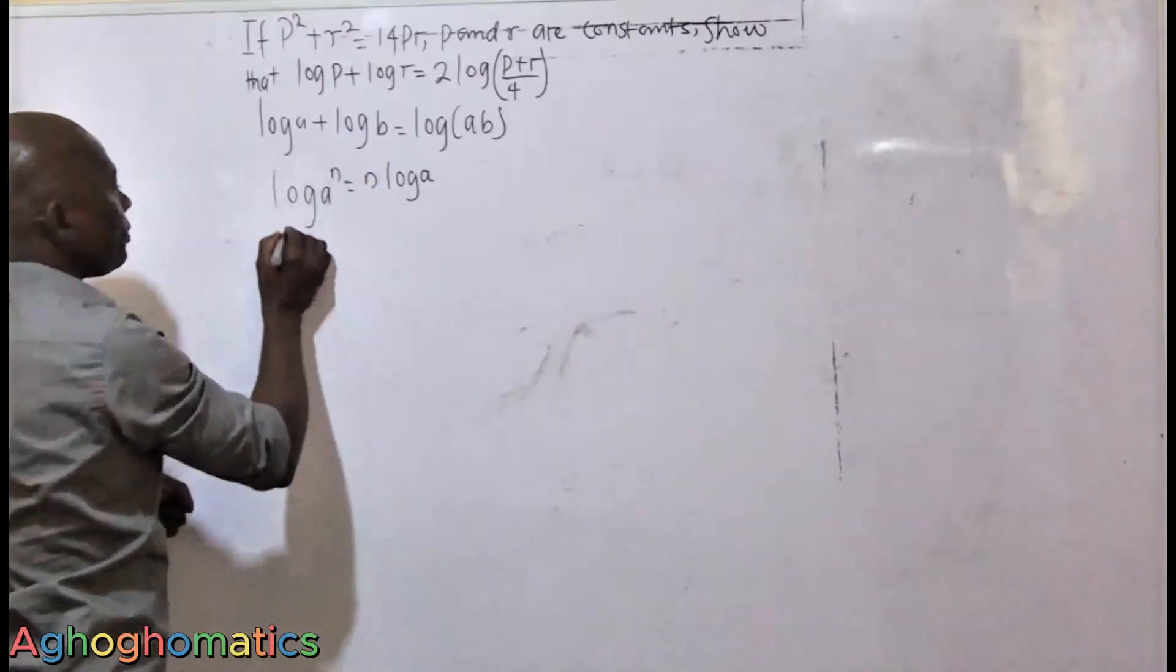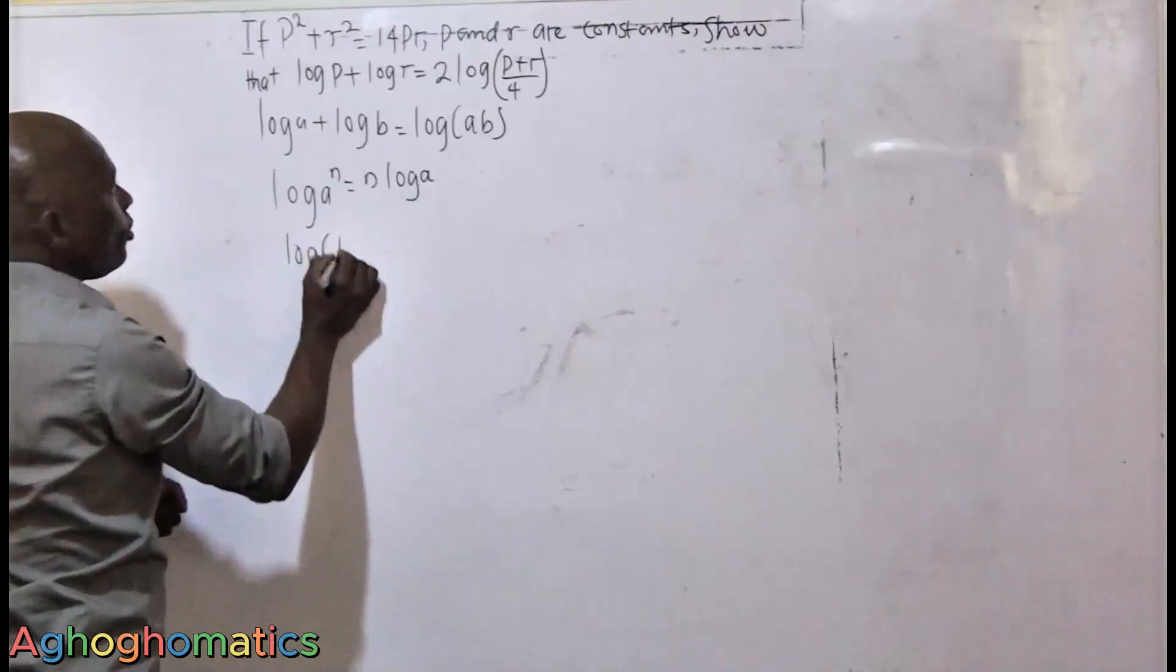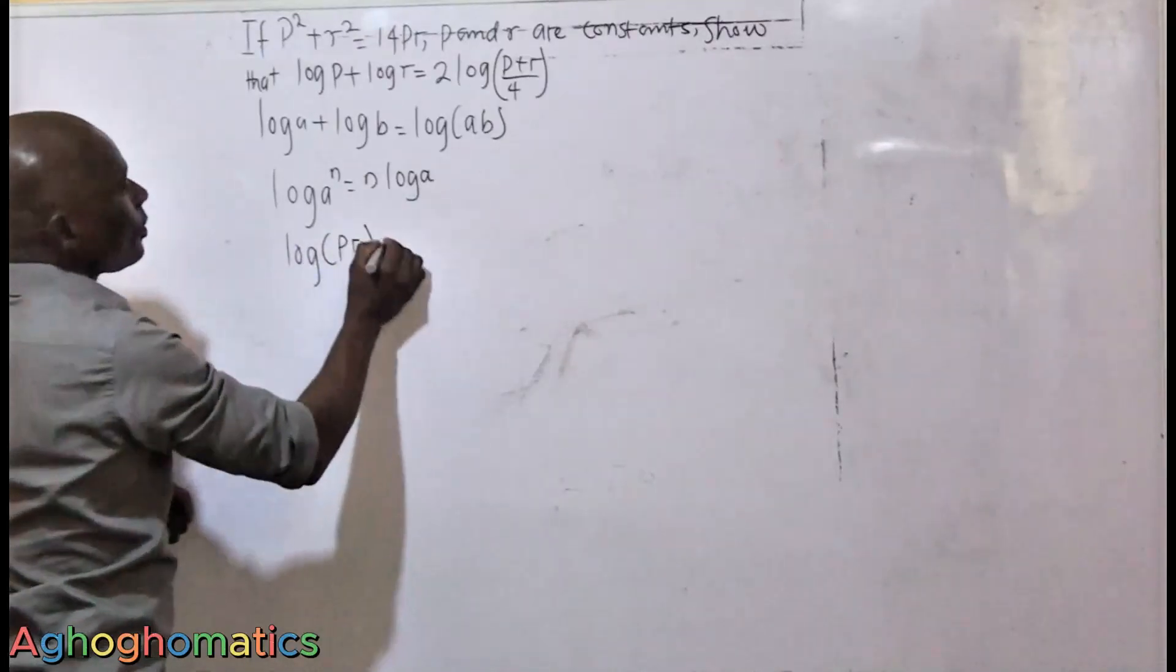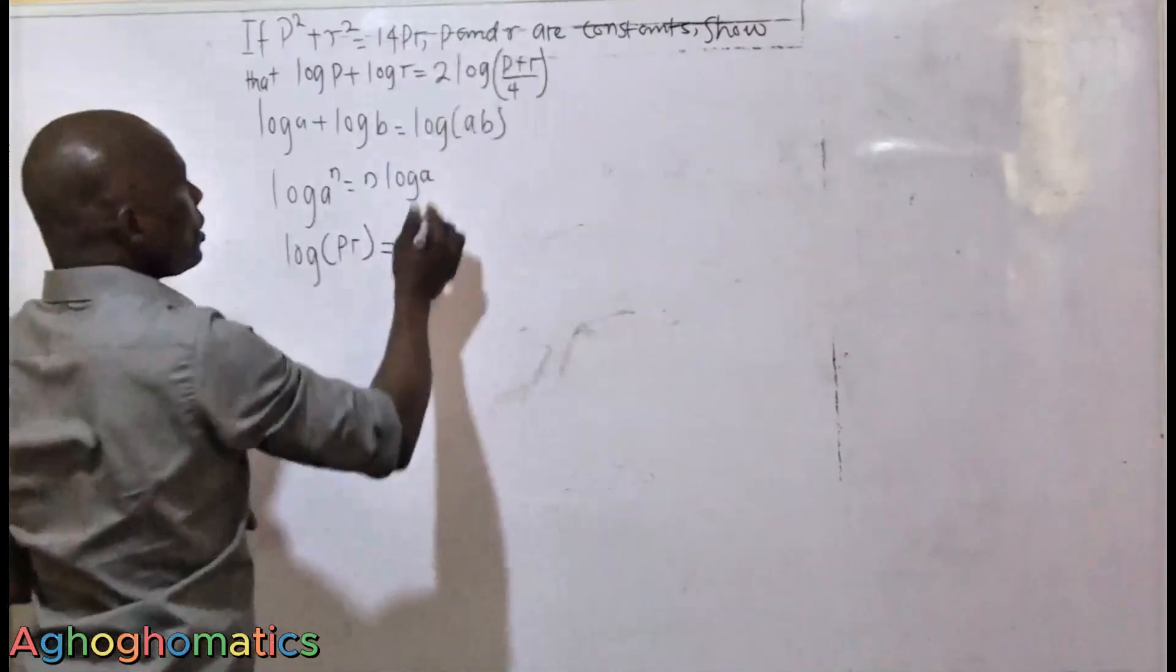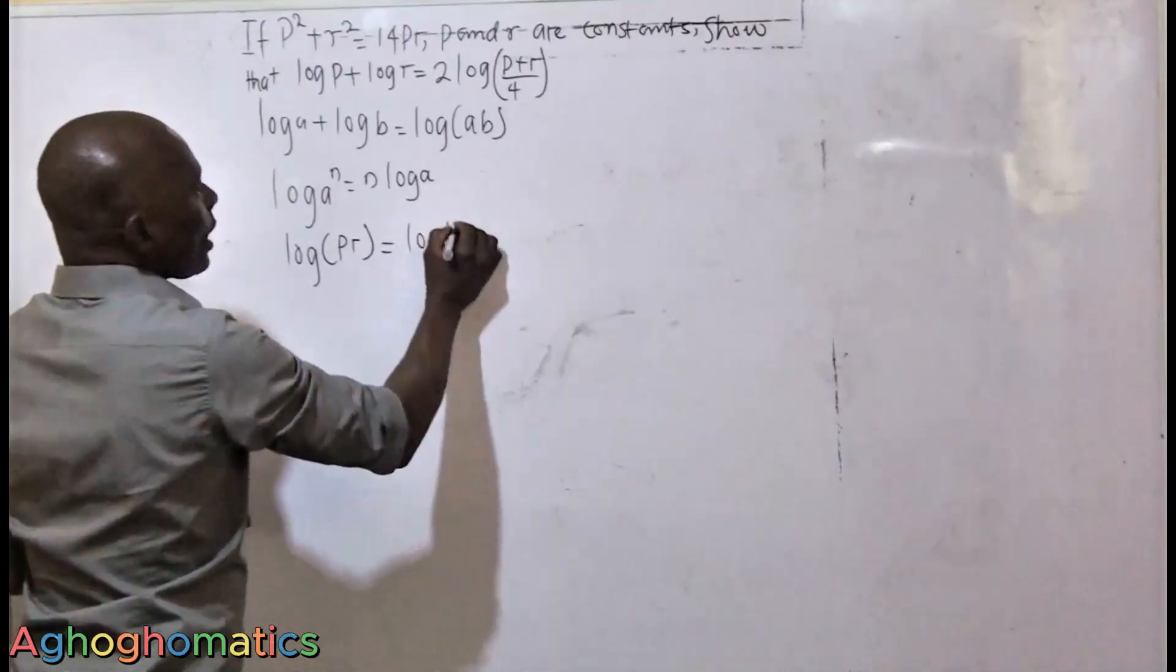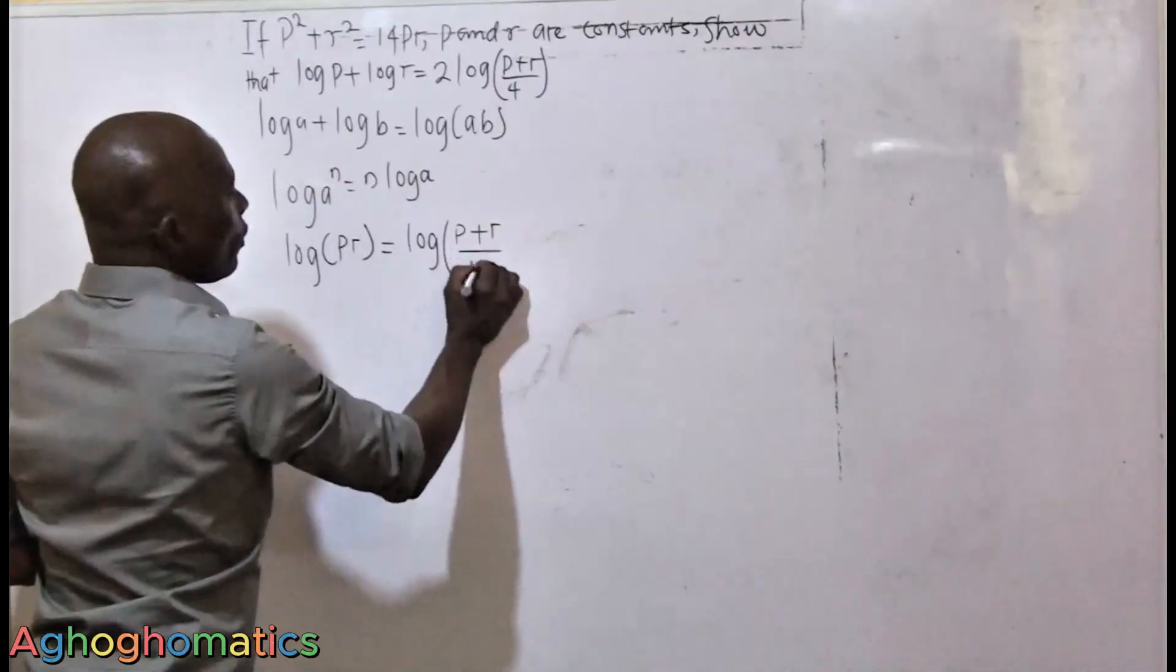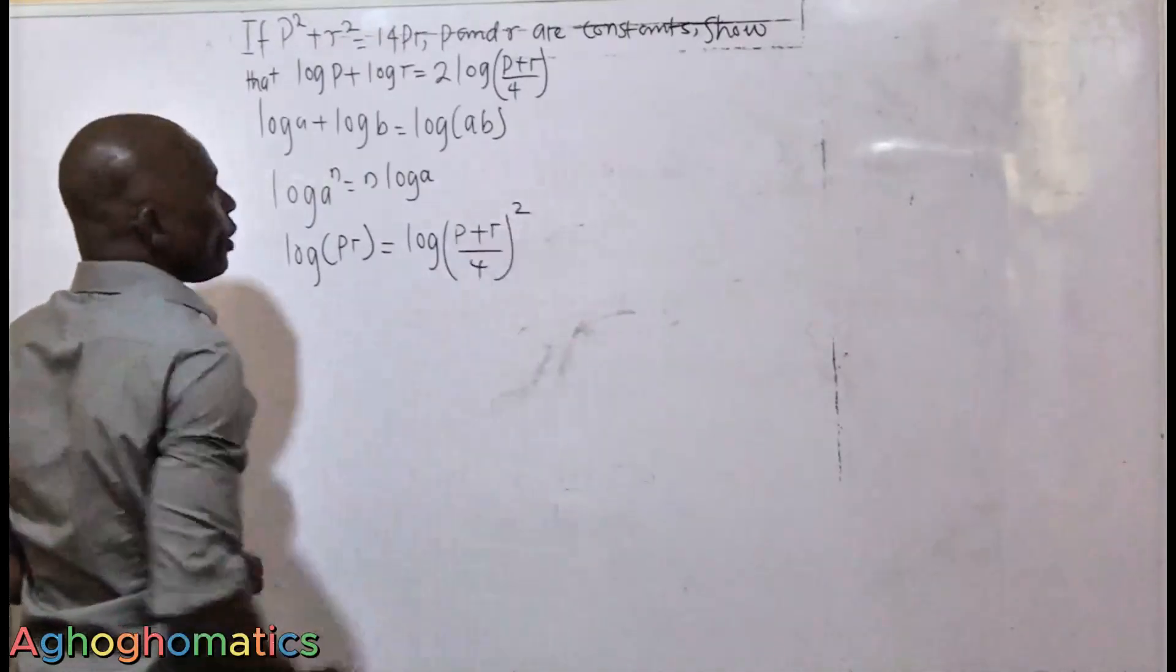So this will become log(PR) is equal to... if we transfer this one this way, this will become log of (P plus R) over 4, closed bracket, raised to the power of 2.